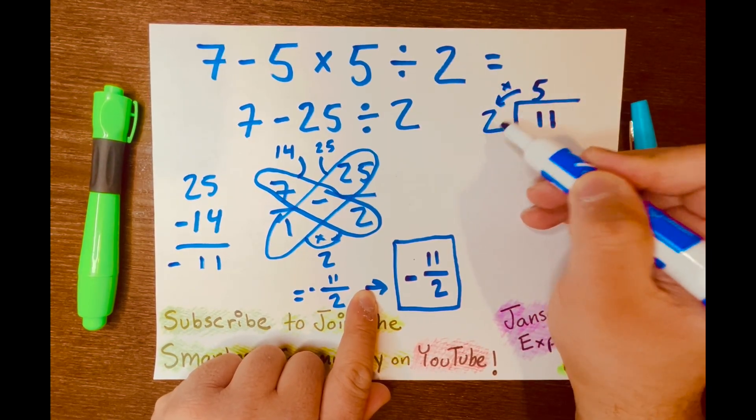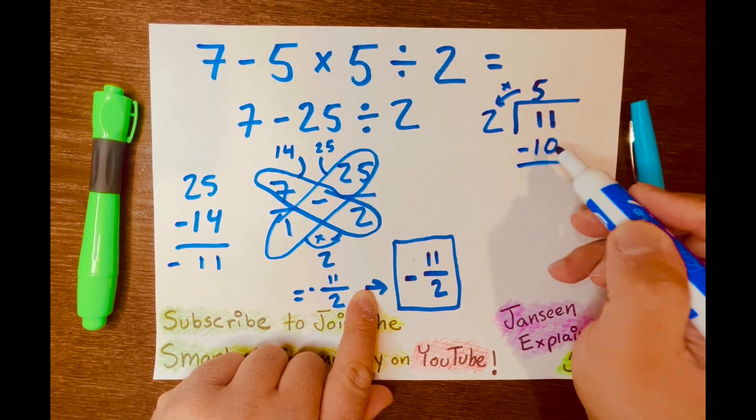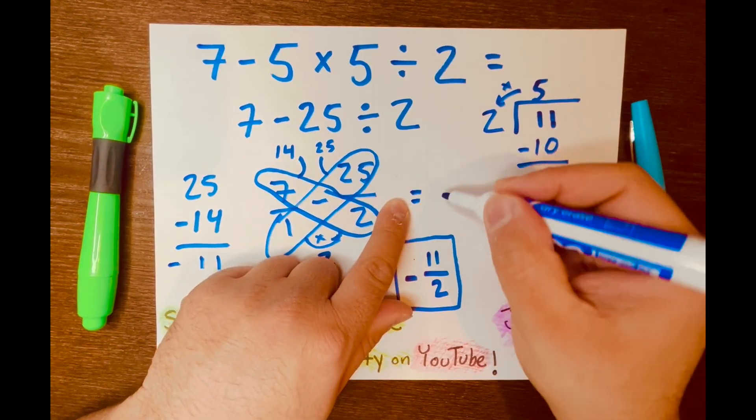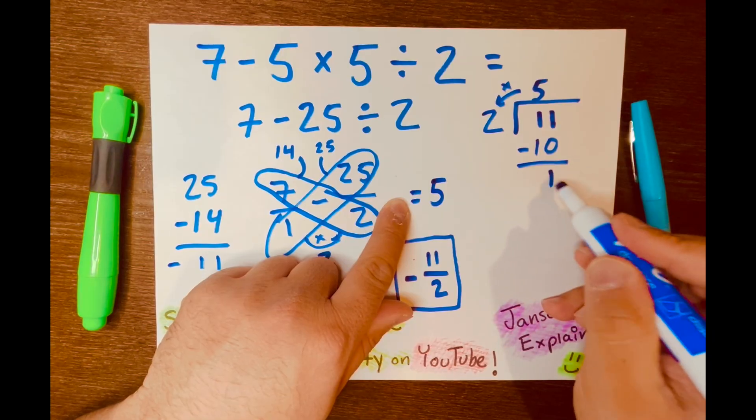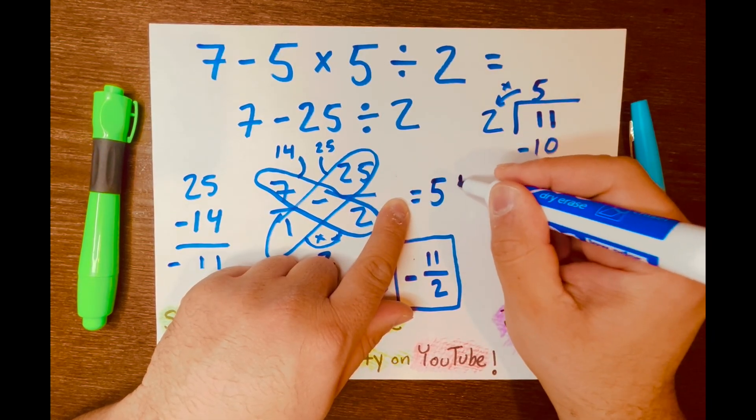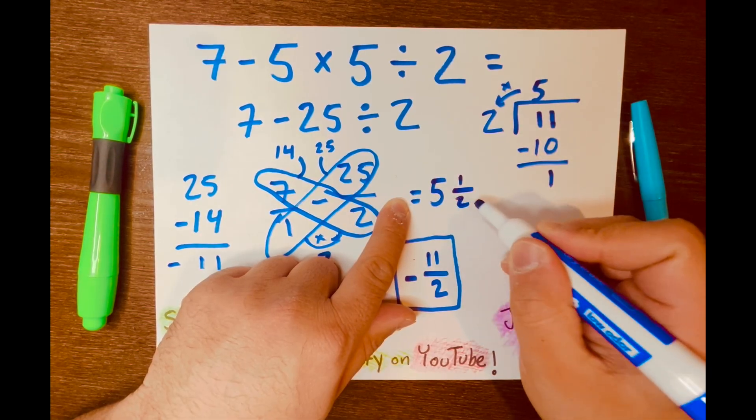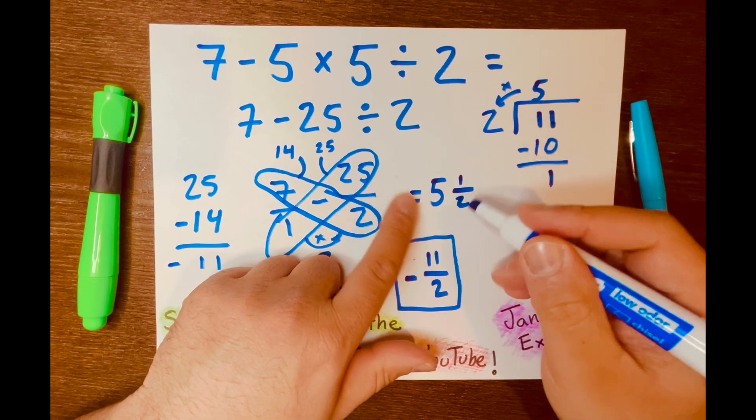Multiply. 5 times 2 equals 10. And we subtract 11 minus 10 equals 1. So we can write the mixed number answer. 5 is the whole number. The remainder, which is 1, goes on top of the proper fraction. And then the 2 goes at the bottom of the fraction there. So we have 5, 1 half.